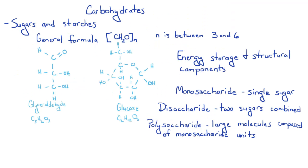Now we move to the major classes of organic molecules found within a cell. The first major class is called carbohydrates. Carbohydrates are sugars and starches. They have the general formula CH2O, where n is a multiplier and n is between 3 and 6.